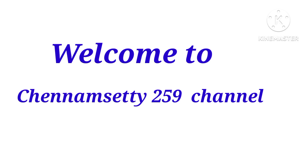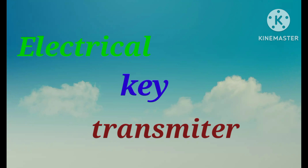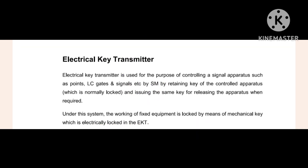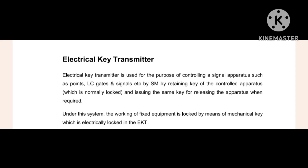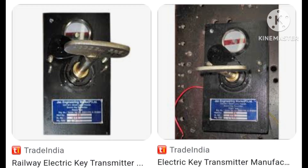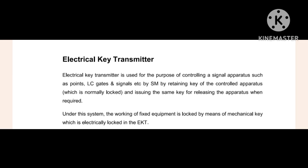Hi friends, today we are going to discuss about the Electrical Key Transmitter. The Electrical Key Transmitter is used for the purpose of controlling signal operators such as points, LC gates, and signals, by the station master by retaining the key of the controlled operators which is normally locked and issuing the same key for releasing the operators when required.